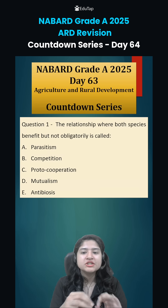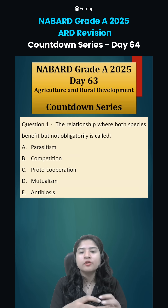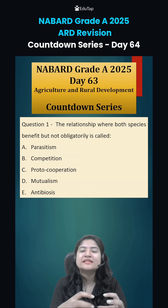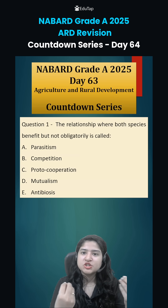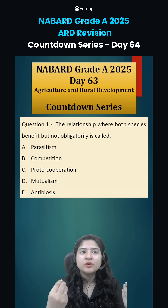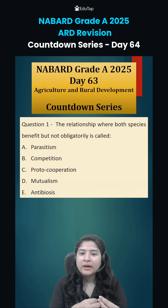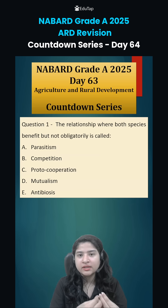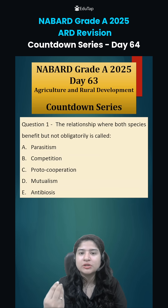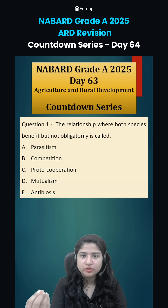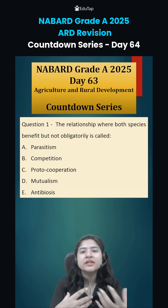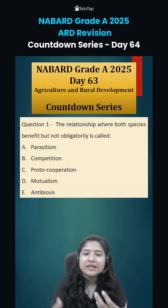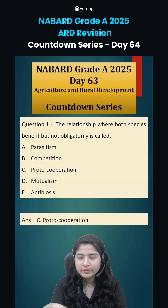Question number 1 was: the relationship where both species benefit but not obligatory is called what? In this type of relationship, species A and species B, whenever they are together, will provide benefit to each other. But it is not obligatory — there is no compulsion for them to be together. Even if they live individually, they can flourish on their own. If they are together, they help each other out and ease each other's life. This type is known as proto-cooperation.